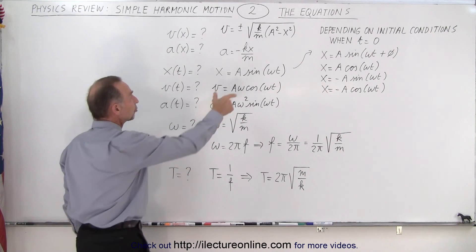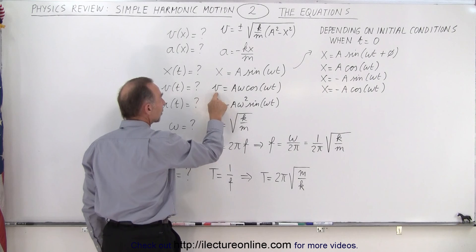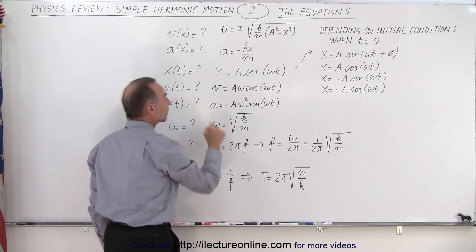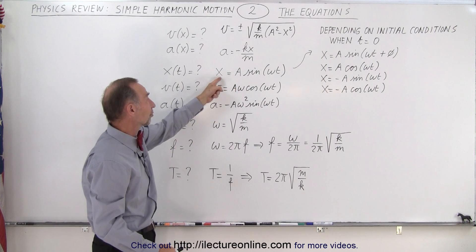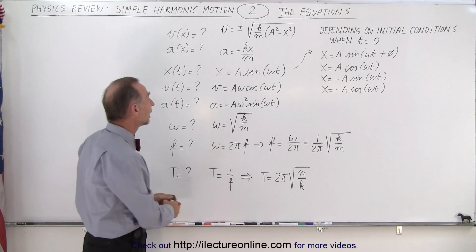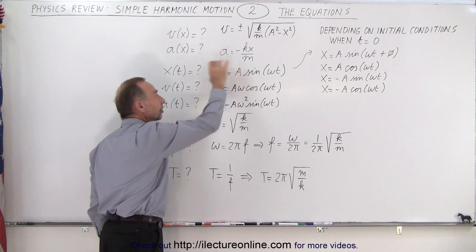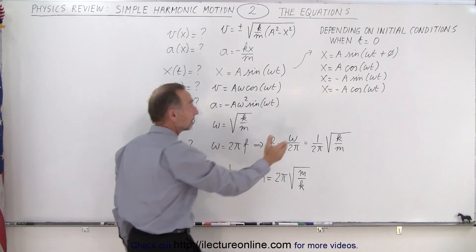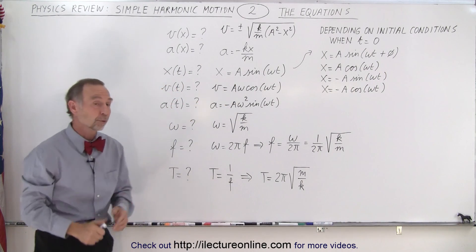Once you have your initial equation for position, then you take the first derivative to find the equation for the velocity, and the second derivative to find the equation for the acceleration. So then, if this was the original position as a function of time equation, then these would be the velocity and acceleration equations according to this equation. Of course, if you start with a different equation, then your velocity and acceleration equations would look different as well.